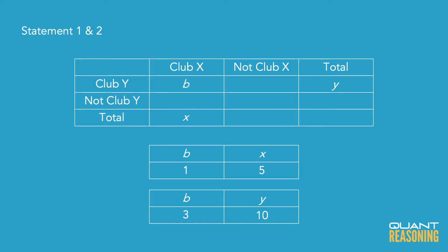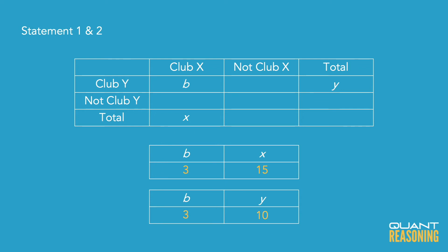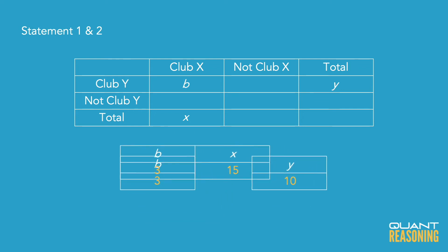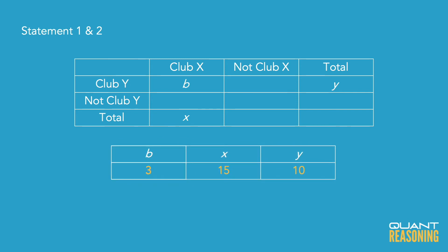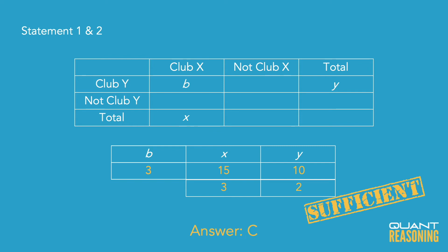But just for practice, let's follow this through. What I would do is expand that first ratio by a factor of three so that I have the same number of ratio units for B in both ratios. So we have three ratio units for B. Then X turns into 15 ratio units because we expanded by a factor of three. And Y is still 10 ratio units.